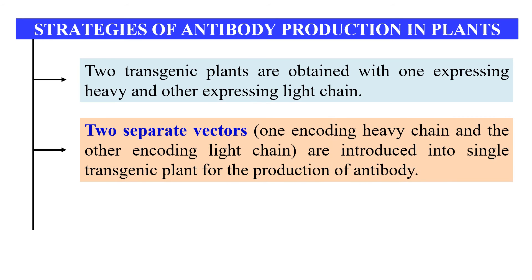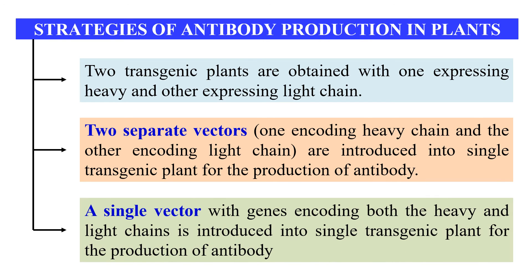The second strategy is that we can use two different vectors — one vector carries the gene for the heavy chain and the other carries the gene for the light chain. Both of these vectors are introduced into a single transgenic plant, which will then produce the antibody because it has two vectors, one containing the heavy chain gene and another containing the light chain gene. The third strategy is to use a single vector in which both the heavy chain and light chain genes are introduced, and this single vector is transformed into the transgenic plant to form the antibody. Out of these three strategies, the third one — the single vector approach — is the most appropriate strategy, as it carries the genes for both heavy and light chains in a single vector.